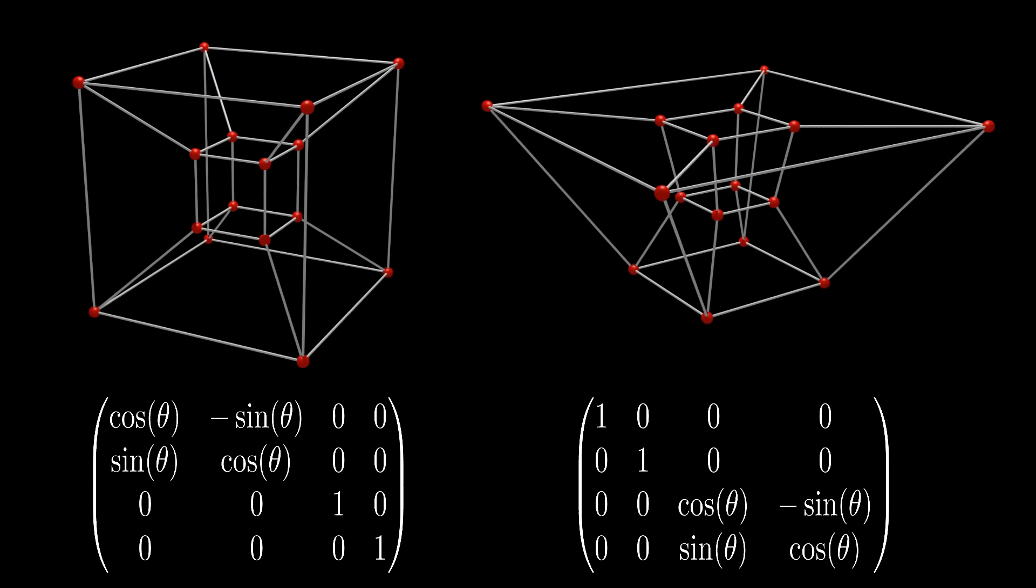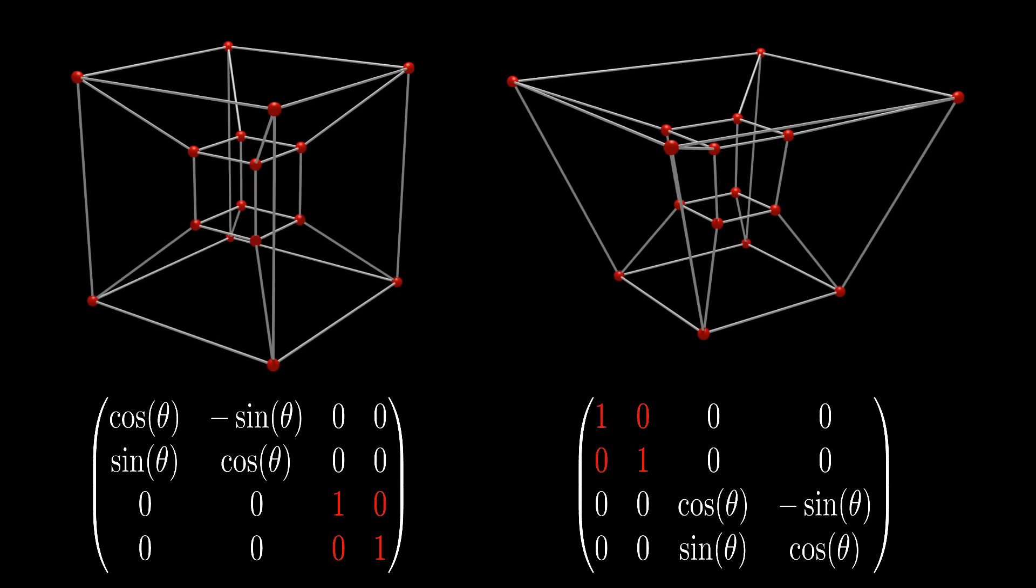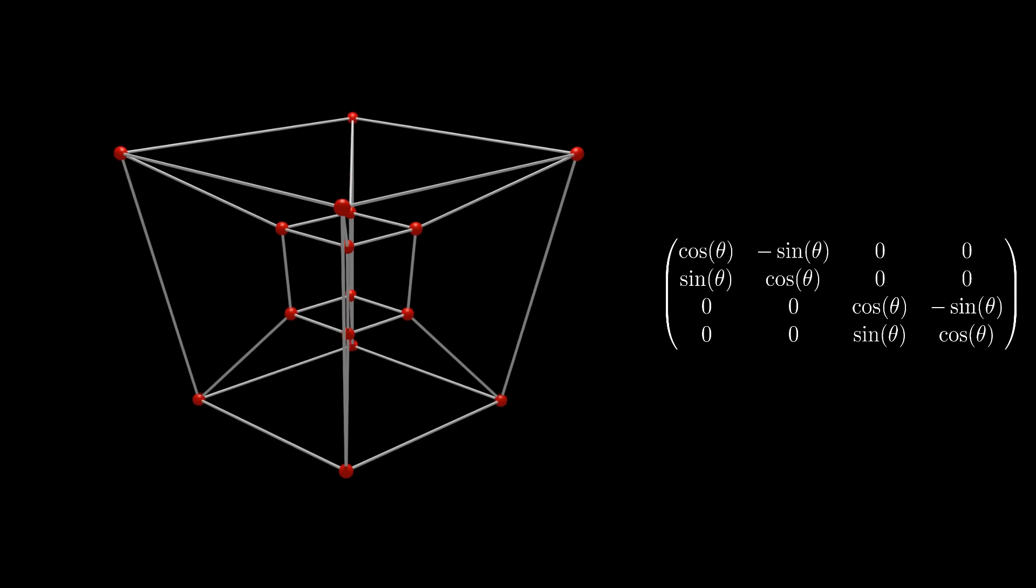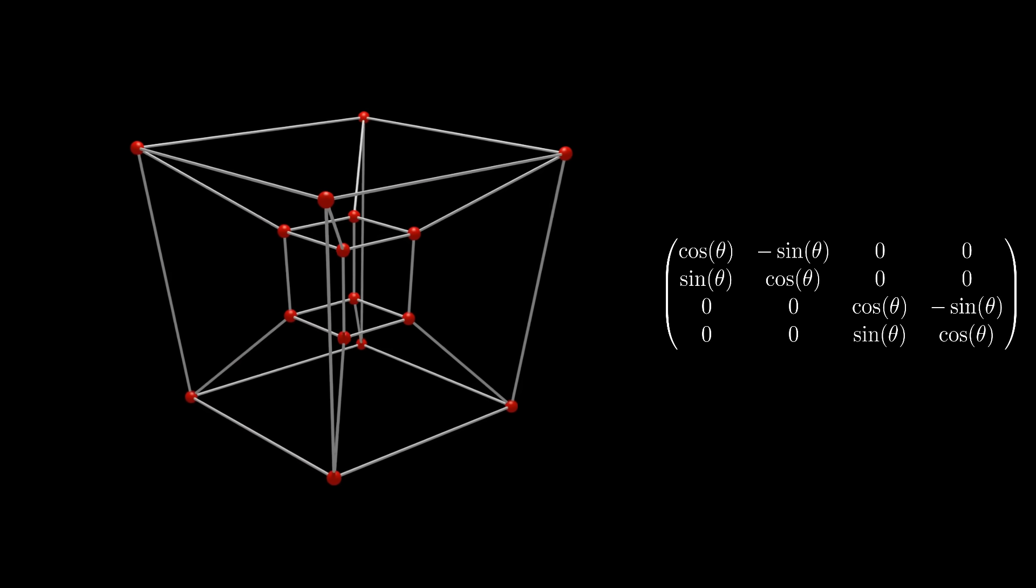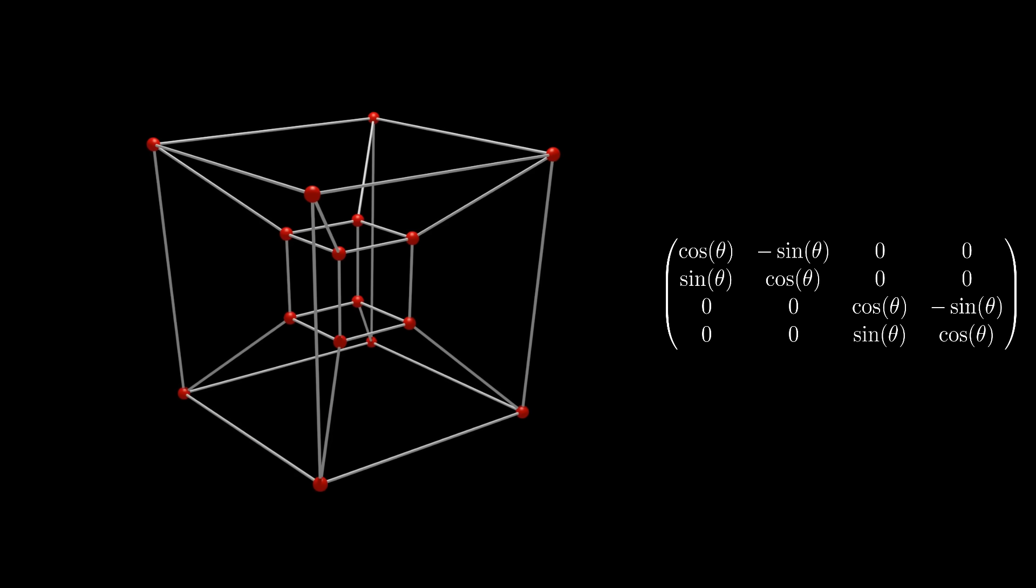Now, it doesn't stop there. Because both of our rotation matrices have two dimensions free at any given moment, we may actually perform a special type of rotation known as a double rotation by rotating in both the XY and ZW plane at the same time. And with this, we can finally replicate the animation on Wikipedia.